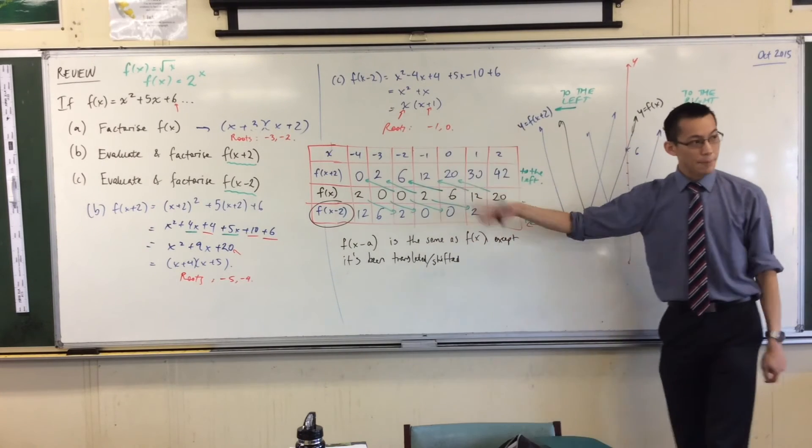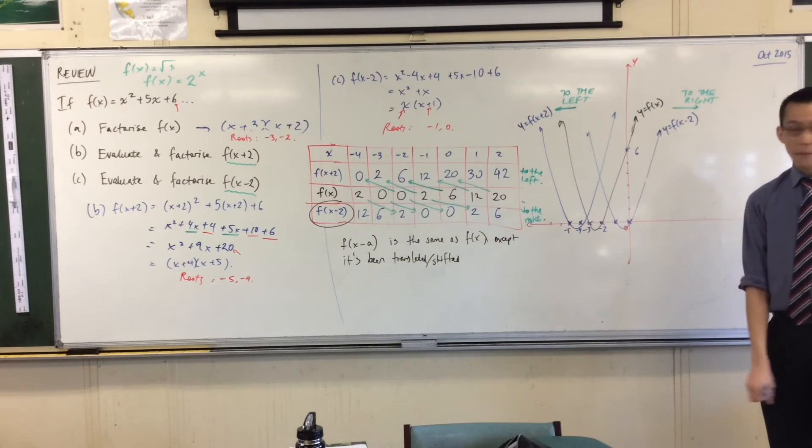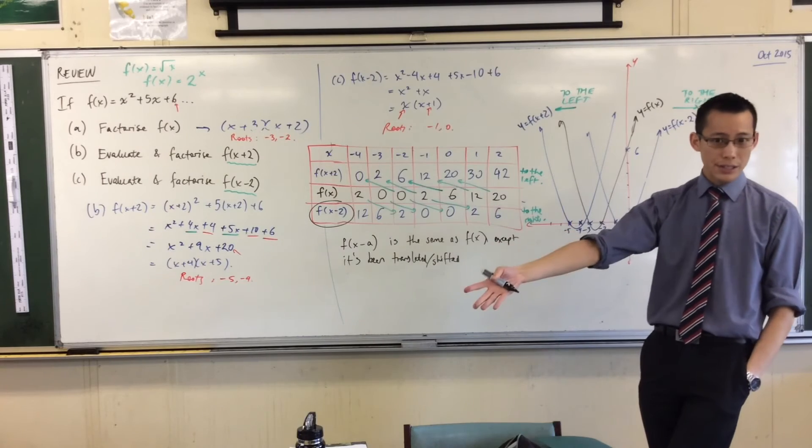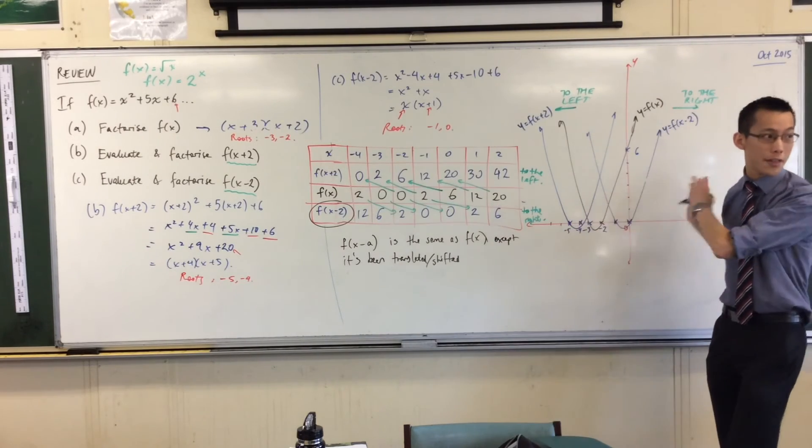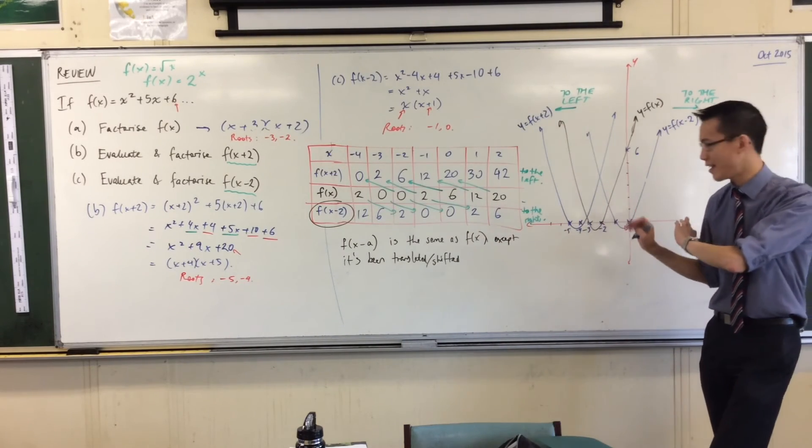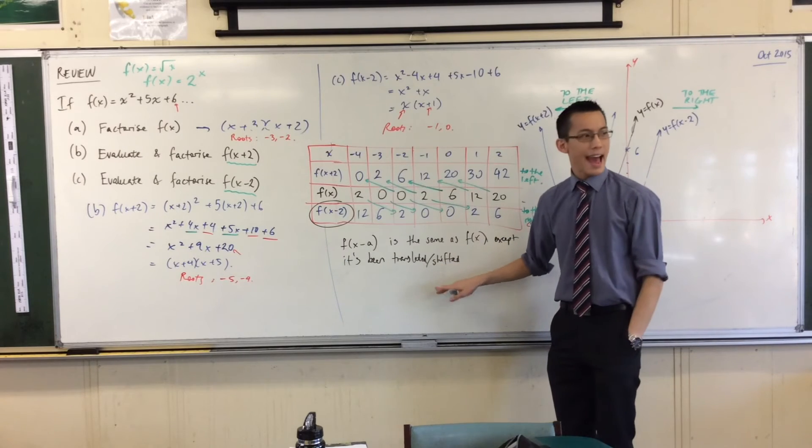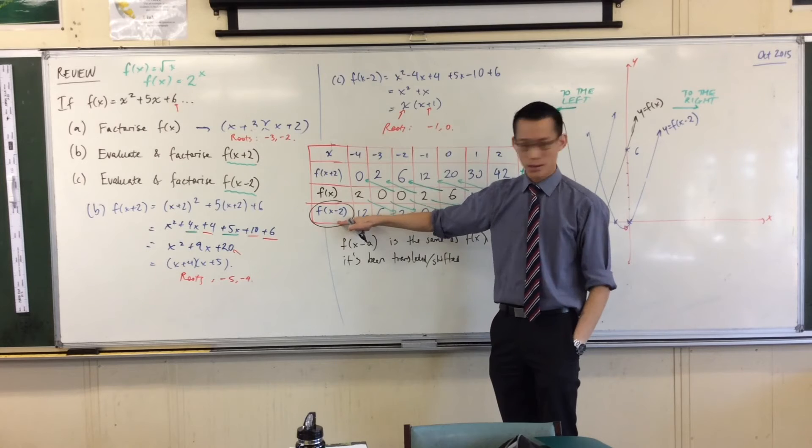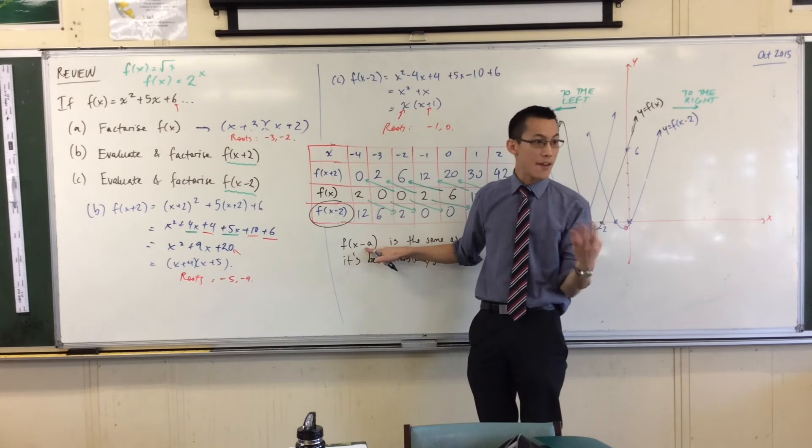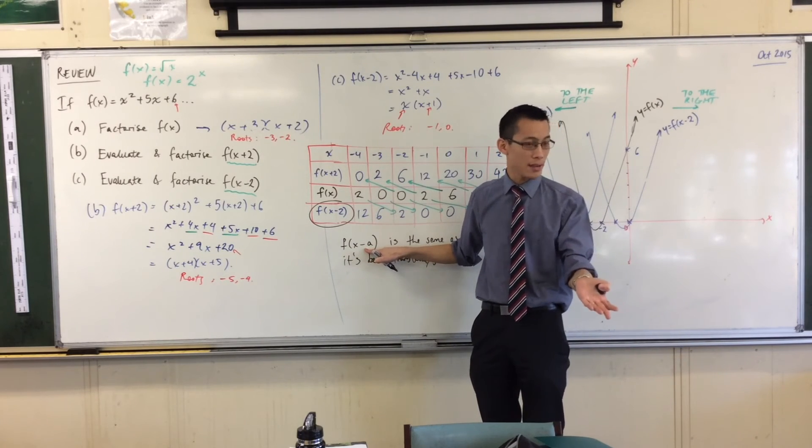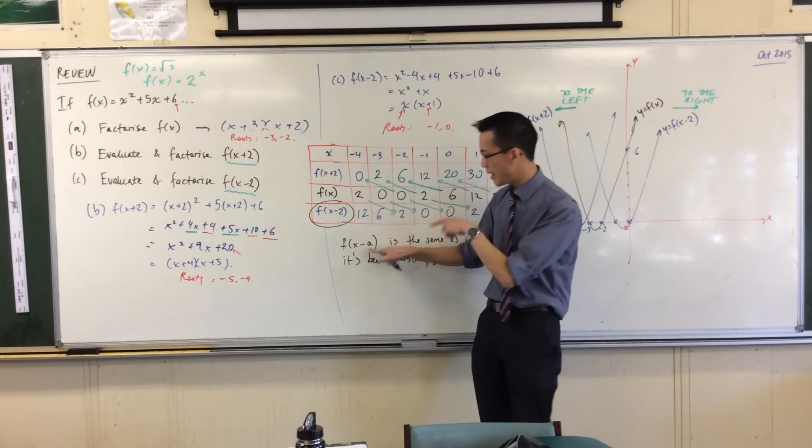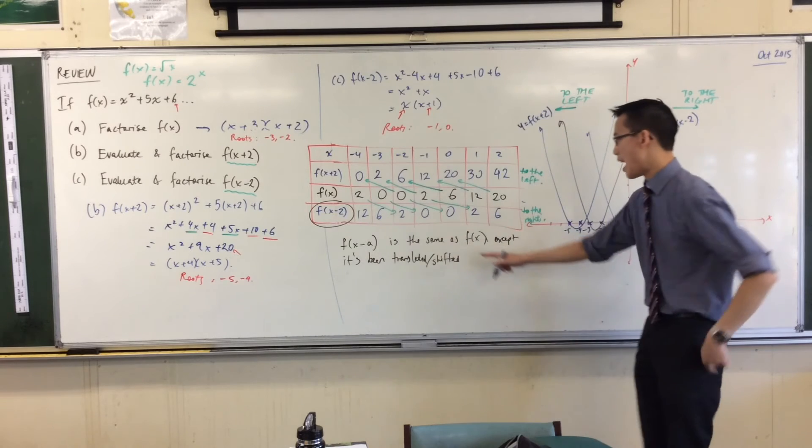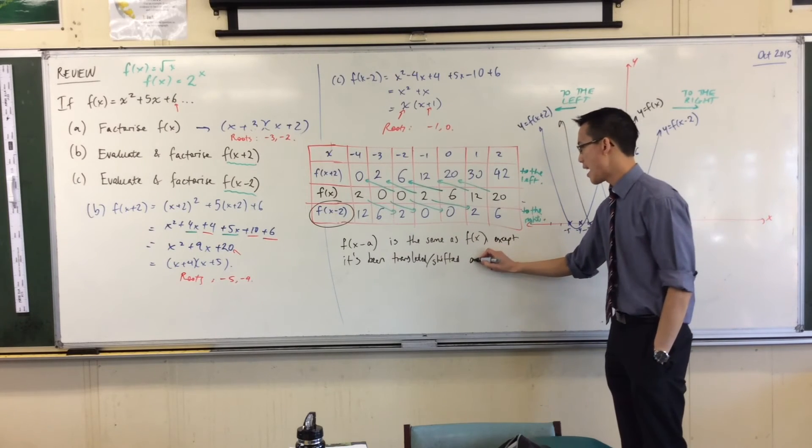Now, in the examples that I gave you, concrete examples, I chose the number 2. But there's no reason I couldn't have chosen 3 or 4 or 5 or 500. Right? It just would have gone further in either of those directions. Right? So, it's been translated how far? For these, it was 2 units. So, if I've got the number a in there, whatever number a happens to be, it won't be 2 units. It'll be a units. Right? Do you see that? Whatever value it is. It's been shifted or translated a units. Which direction?